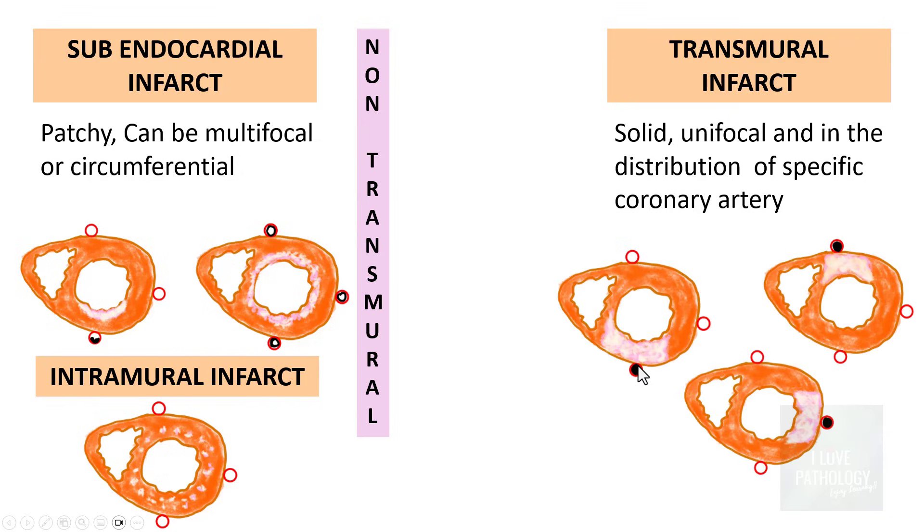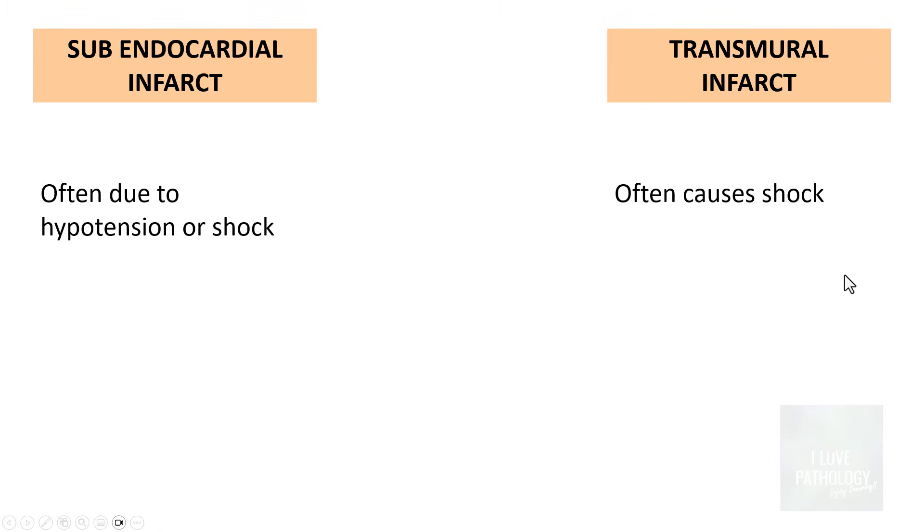You can see that if this is a coronary artery which is obstructed, the distribution of the infarct is restricted to the area of blood supply which it receives from that particular artery. So similarly, you can see that these are transmural infarcts.